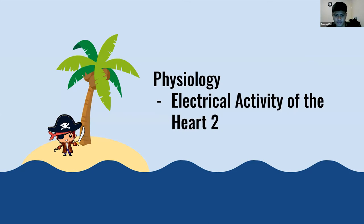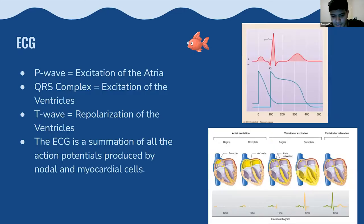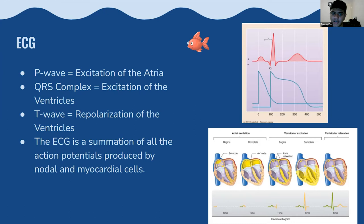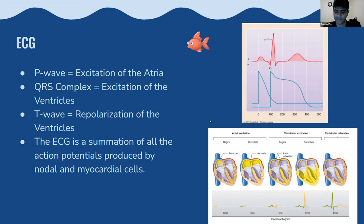Now covering the physiology lecture on electrical activity of the heart, part two. The key ECG basics: the P wave — the small bump at the very start — is associated with excitation of the atrium. The next big spike, the QRS complex, is associated with excitation of the ventricles. The T wave at the end represents repolarization of the ventricles.